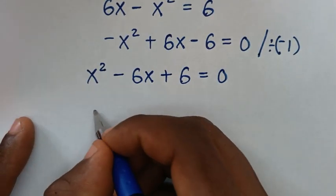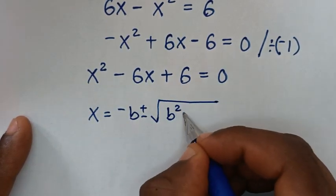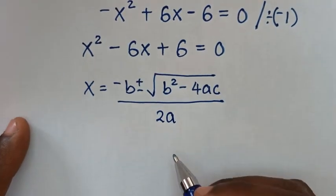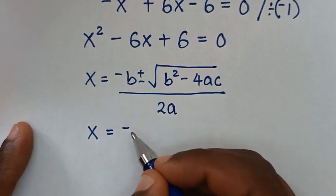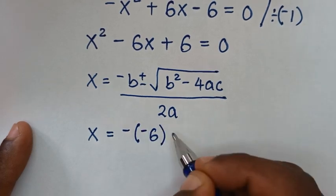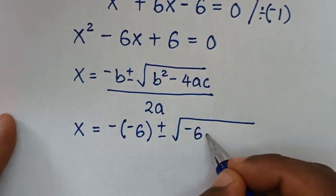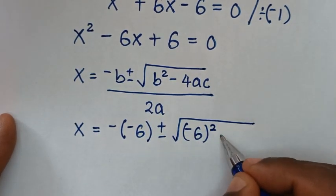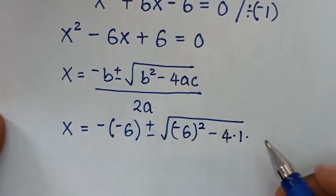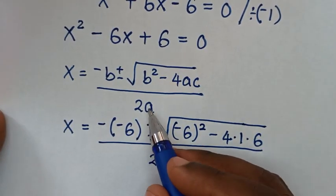The quadratic formula is x equals negative b plus or minus square root of b squared minus 4ac, all over 2a. Here a is 1, b is negative 6, and c is 6. So x equals negative (negative 6) plus or minus square root of (negative 6) squared minus 4 times 1 times 6, all over 2 times 1.